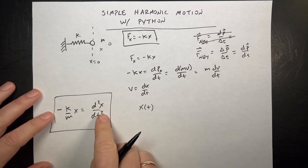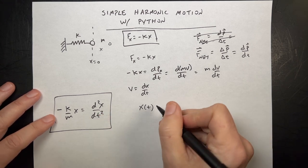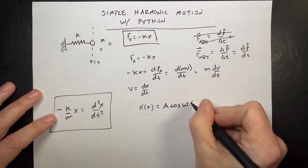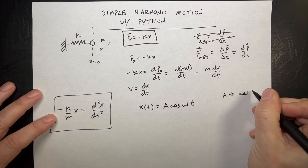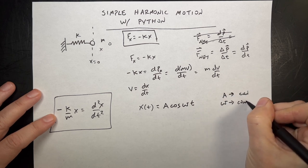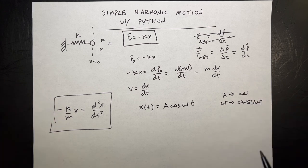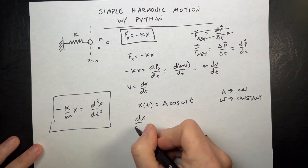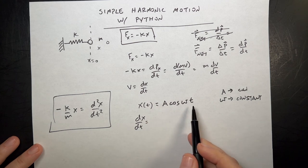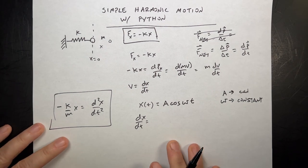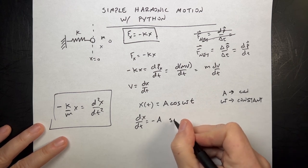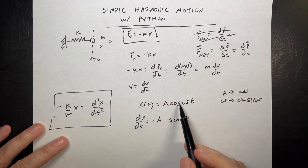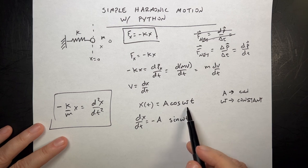What functions, when you take the derivative twice, do you get the same thing back? One of them looks like this: x equals A cosine(ωt), where A is some constant and ω is some constant. Let's just see if this does indeed work. If I take the derivative once, I get dx/dt equal to the derivative of this — the derivative of cosine is negative sine — so I get negative A sine(ωt). Then I have to take the derivative of the inside by the chain rule, and the derivative of ωt is ω.